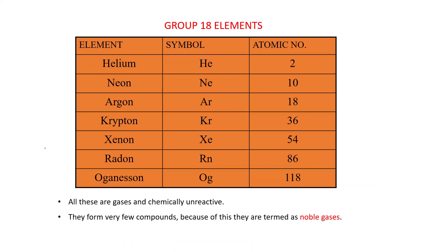What are the elements involved in group 18? You can see from this table: these elements are Helium (He), Neon (Ne), Argon (Ar), Krypton (Kr), Xenon (Xe), Radon (Rn), and Oganesson (Og), and these are their atomic numbers.